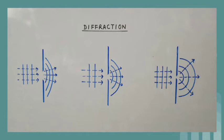As seen in the diagram, when the size of the aperture is smaller, the light wave deviates more. Diffraction occurs in all types of waves, like sound waves and radio waves.